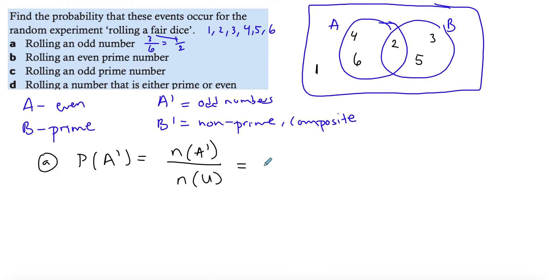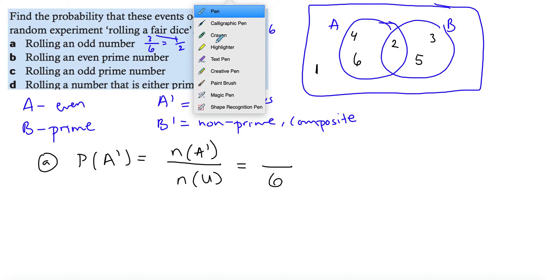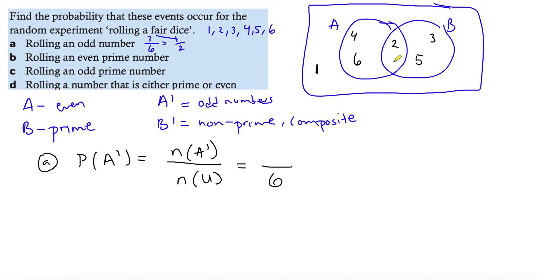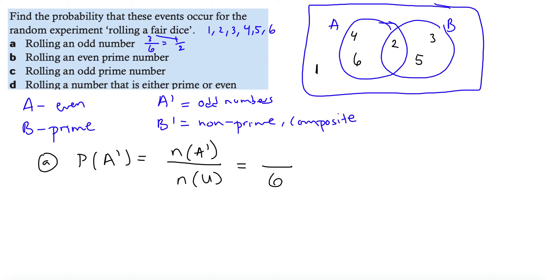In total we have six elements, and I want to know how many are outside A. Shading 'not A' means shading everything outside the A circle. There is a video on shading if you're unsure. The elements I've shaded total three, so the probability is three over six, which simplifies to one over two.